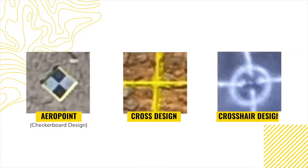First, they should be of a high contrast design to be easily distinguishable from the surrounding terrain, such as white spray paint on asphalt. Second, they should have clear geometry indicating the measured center of the marker, with the most common marker designs being a checkerboard — which is incorporated into the AeroPoint design and functions as a smart ground control point — a cross or X, or a crosshair, as seen in these example images from a drone survey.